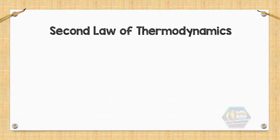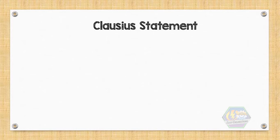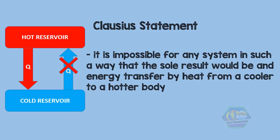The major statements of the second law of thermodynamics are the following. First is the Clausius statement that says: It is impossible for any system to operate in such a way that the sole result would be an energy transfer by heat from a cooler to a hotter body.